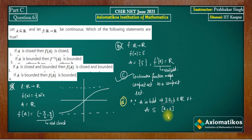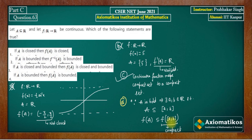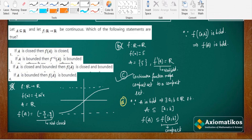Now, f(A) will be contained in f([a, b]). We know that if A is a subset of B, then f(A) is a subset of f(B). You just said that the image of a compact set is a compact set, so this set [a, b] is compact. By the Heine-Borel theorem, any set compact in the real line means it is closed and bounded, and if it is closed and bounded, it is compact. Since f([a, b]) is compact, it is bounded. And since f(A) is a subset of f([a, b]) which is bounded, f(A) is also bounded. So the fourth part is actually correct.